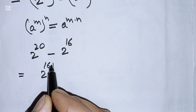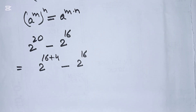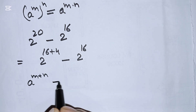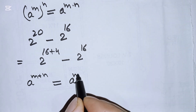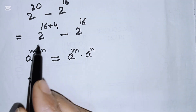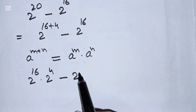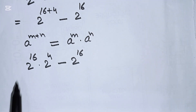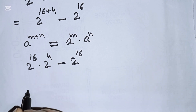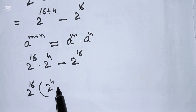Now 2^20 can be written as 2^(16 plus 4). We apply another formula: a^(m+n) equals a^m times a^n. So here we get 2^16 times 2^4, then minus 2^16. The two 2^16 terms are the same.